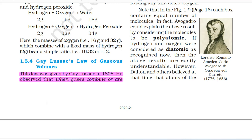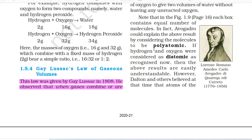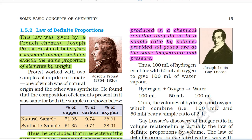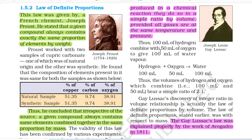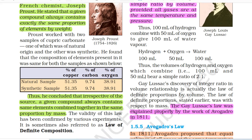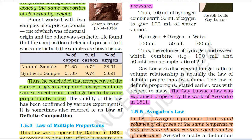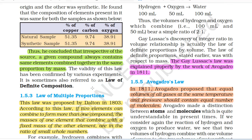1.5.4 Gay-Lussac's Law of Gaseous Volumes. This law was given by Gay-Lussac in 1808. He observed that when gases combine or are produced in a chemical reaction, they do so in a simple ratio by volume provided all gases are at the same temperature and pressure. Thus, 100 ml of hydrogen combined with 50 ml of oxygen to give 100 ml of water vapour. The volume ratio of hydrogen to oxygen is 2:1. Gay-Lussac's discovery of integer ratios in volume relationships is actually the law of definite proportions by volume. Gay-Lussac's law was explained properly by the work of Avogadro in 1811.